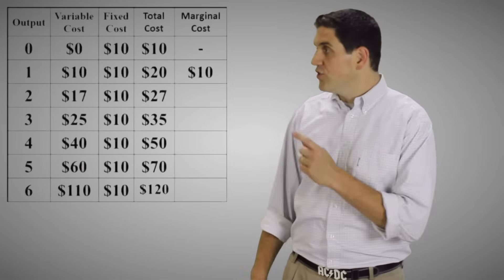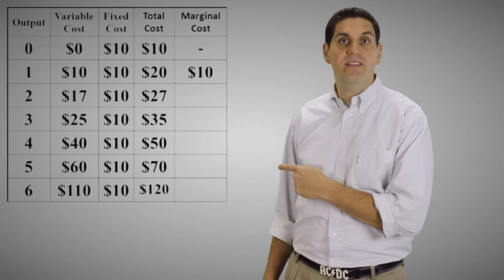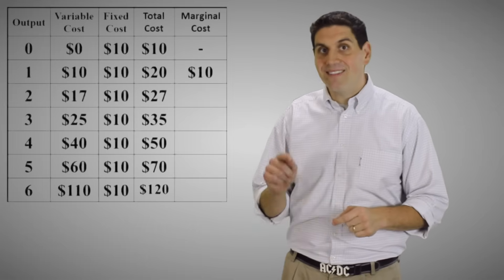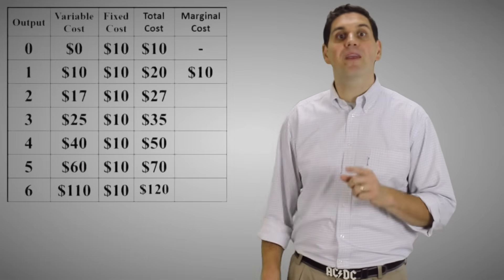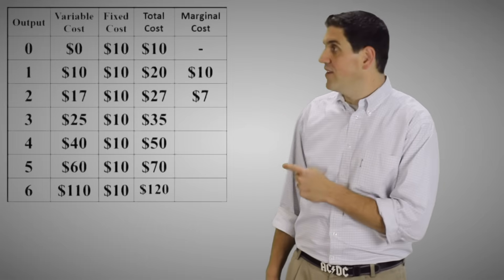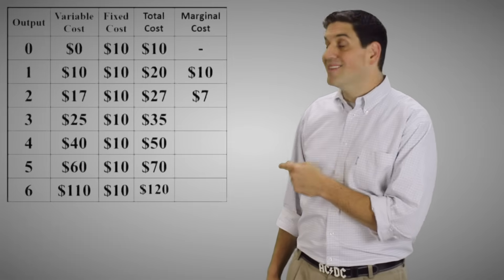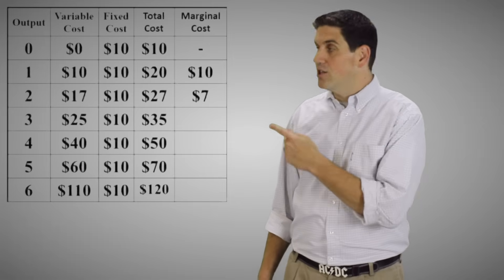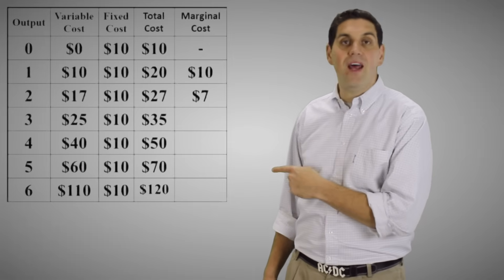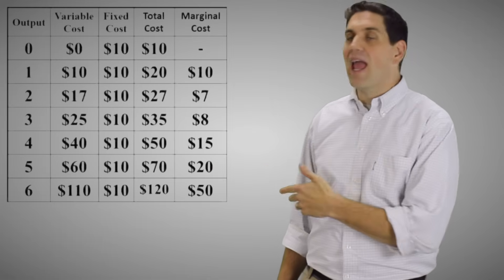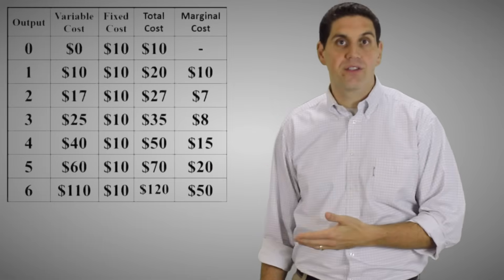Since the total cost of two units is $27, the additional cost of that second unit must be an additional $7. So again, the marginal cost is the change in total cost divided by the change in output. So it's $8, $15, $20, and $50.